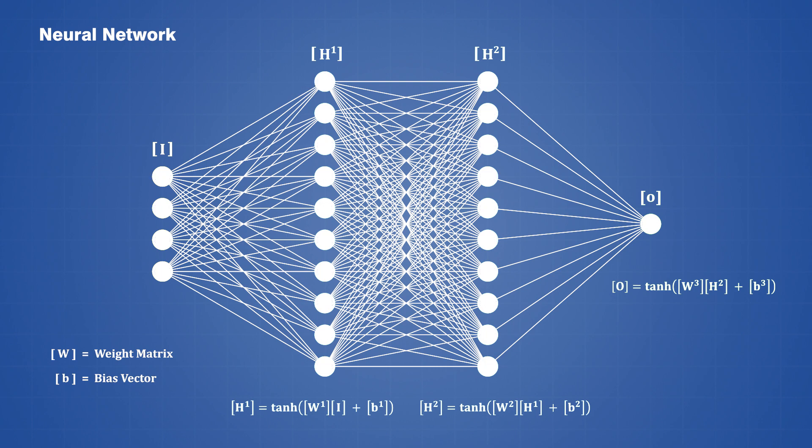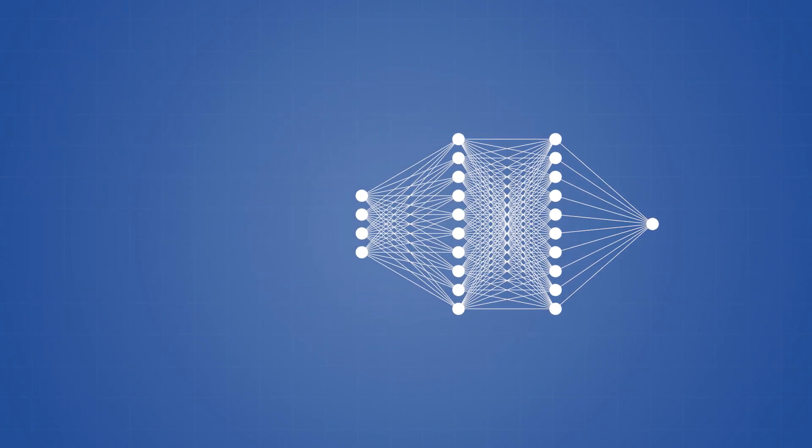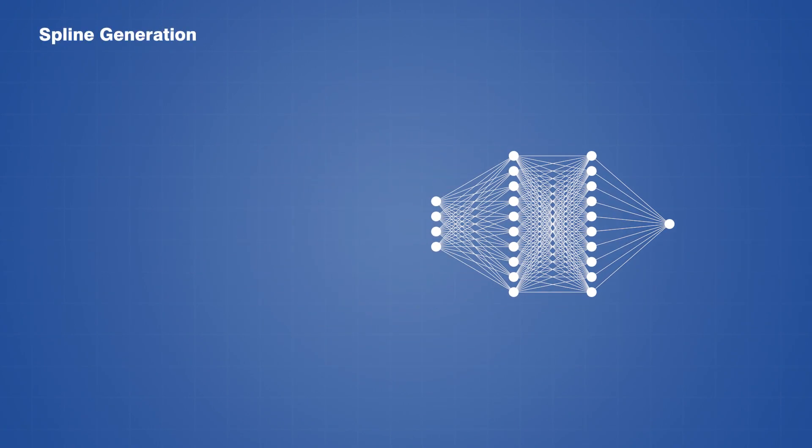At this point you may be wondering what any of this has to do with designing a rollercoaster, so now let's see how we can use this neural network to generate a track spline. To begin, we need to pick a starting point where the coaster has a known velocity, height, energy, and track angle, and we need to choose a node spacing that will discretize the track into a finite number of segments.